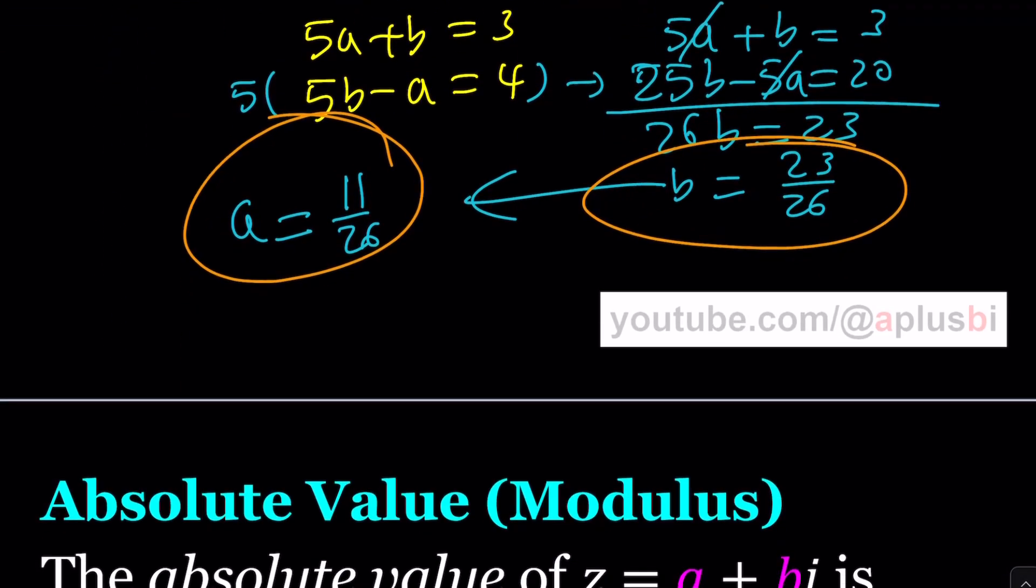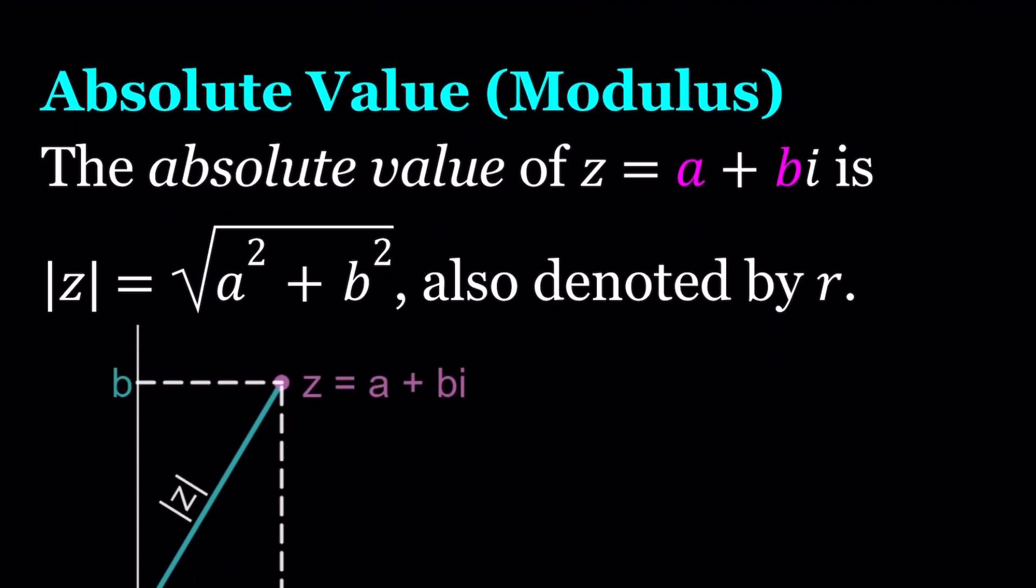Okay, let's go ahead and talk about another topic real quick, but we're going to go into more detail in the next episode, so make sure to watch that as well. The next topic we're going to talk about is absolute value, which is also called the modulus of a complex number. So the absolute value of z equals a plus bi is given by the square root of a squared plus b squared, also denoted by r, which could mean radius.